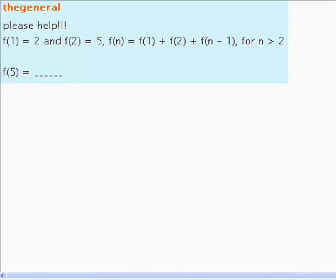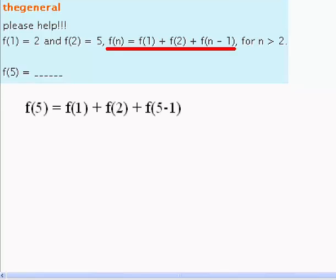Now we are asked to find f(5). We can start by defining the function f(5) using the generic equation that was given to us. Therefore, f(5) = f(1) + f(2) + f(5-1).